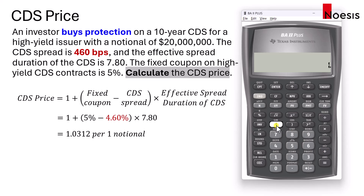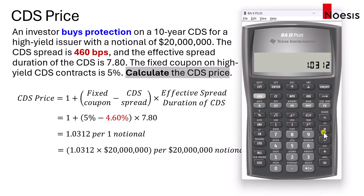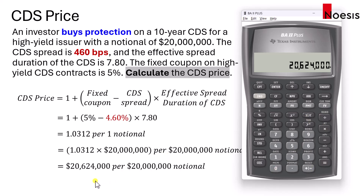You take 1 plus bracket 0.05 minus 0.046 close bracket times 7.8, and you get 1.0312 per 1 unit notional. Since the notional of the contract is $20 million, we multiply by $20 million and we get $20,624,000. So that is the CDS price per 1 unit notional and also based on the notional given by the question.